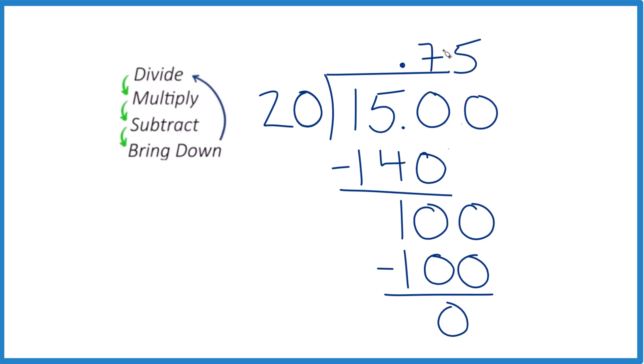15 divided by 20 is 0.75. I might put a 0 here, call it 0.75. And that's it. This is Dr. B. Thanks for watching.